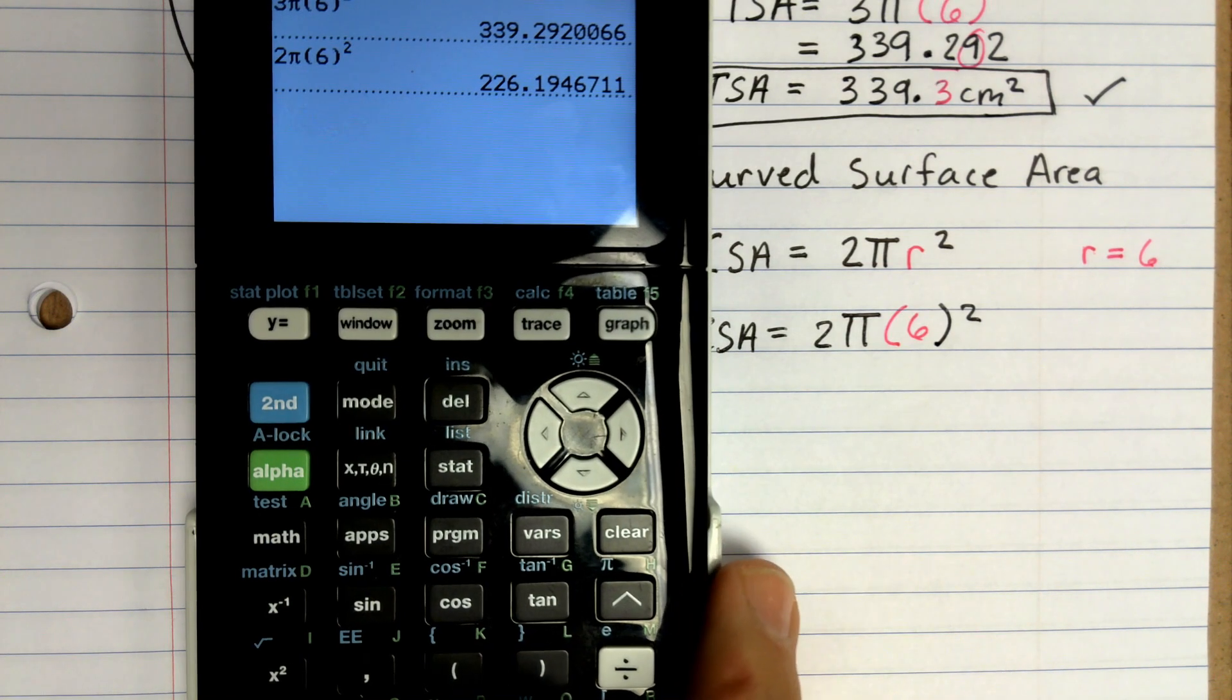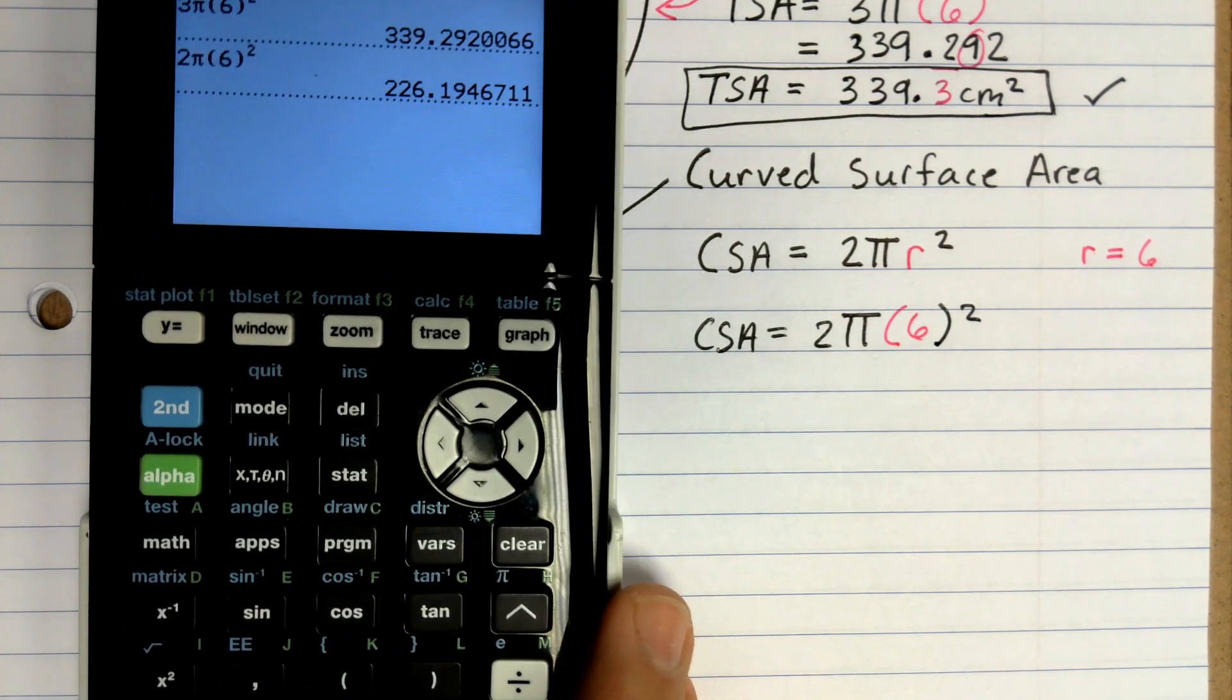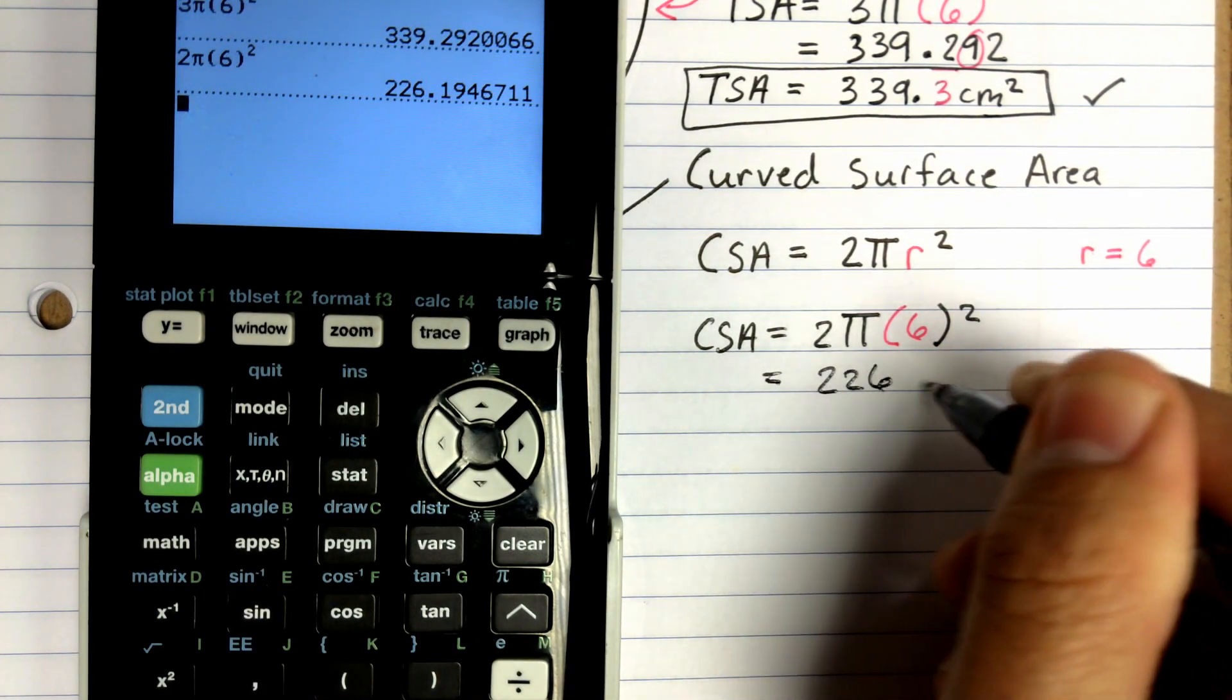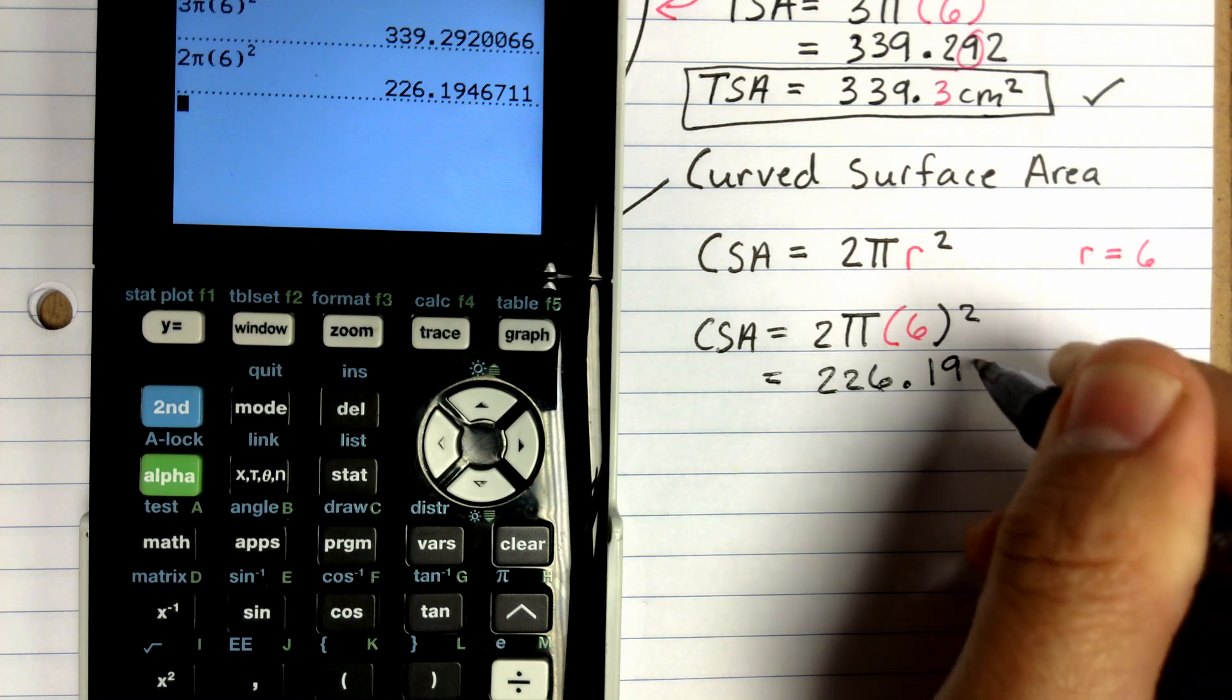And it gives me 226. I'm going to write this number down real quick. So this equals 226.194.